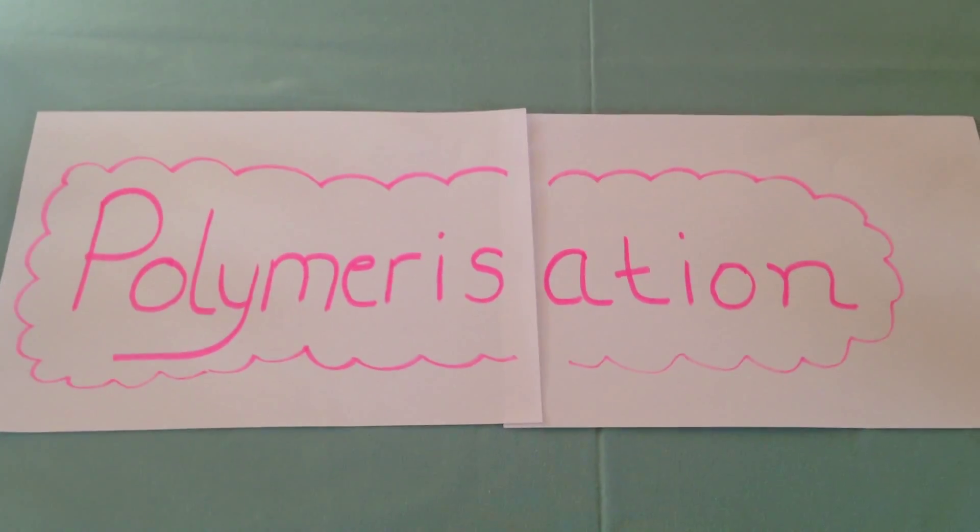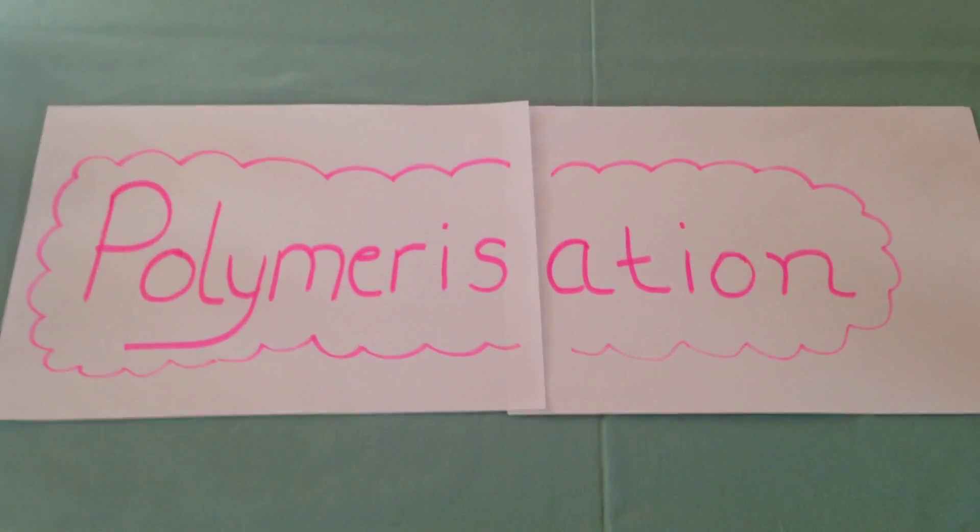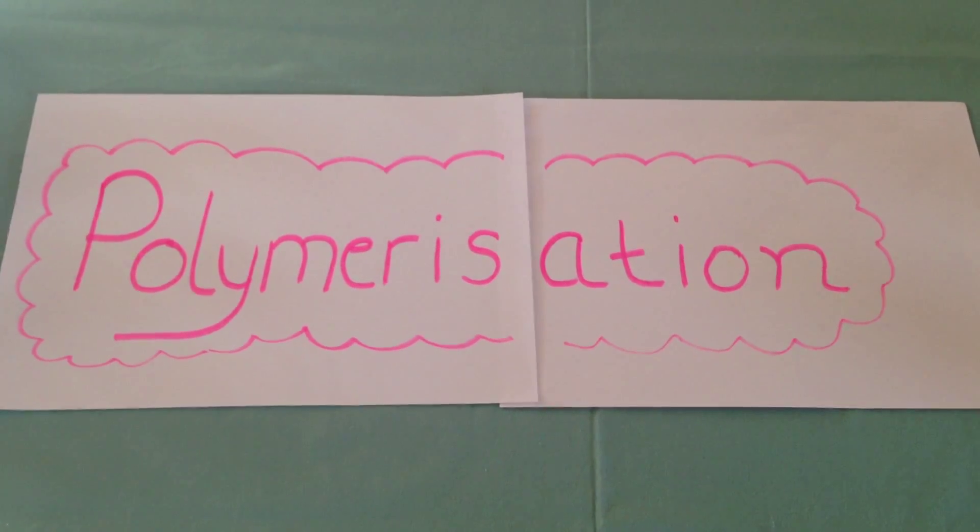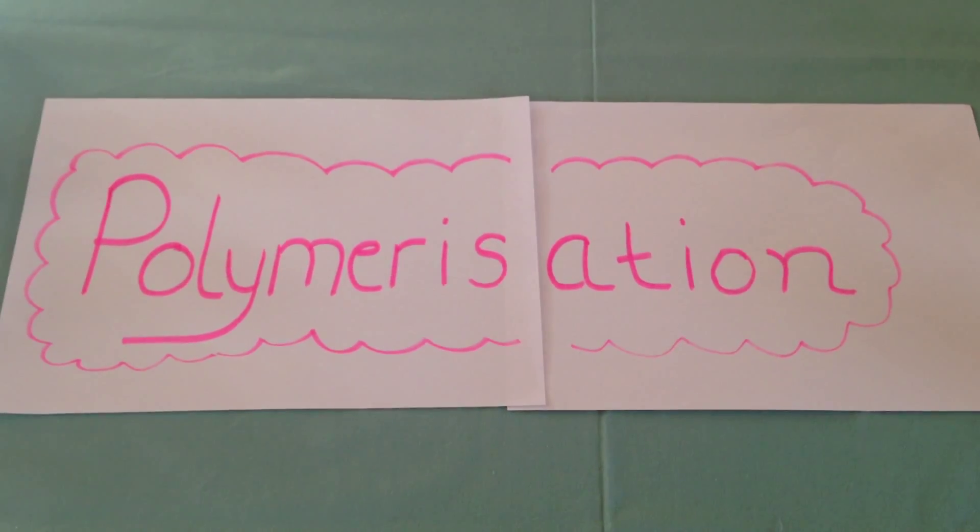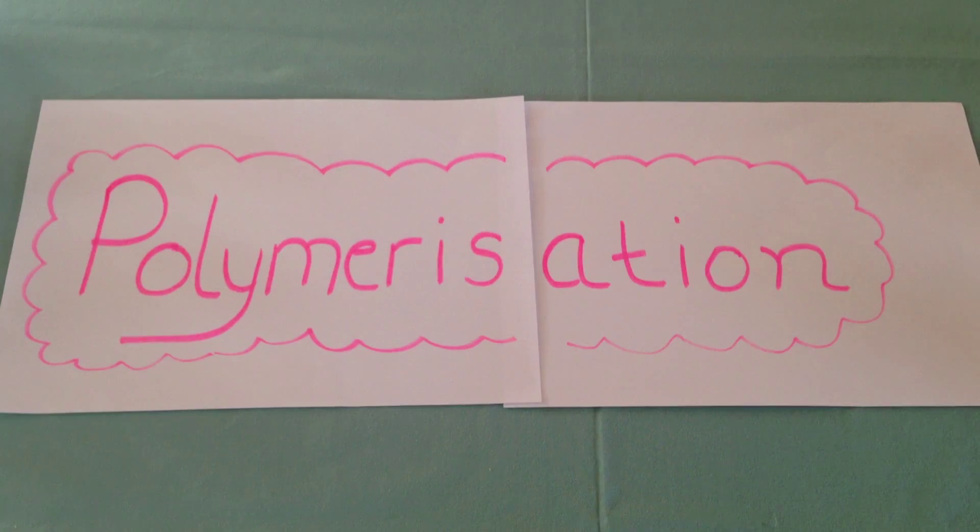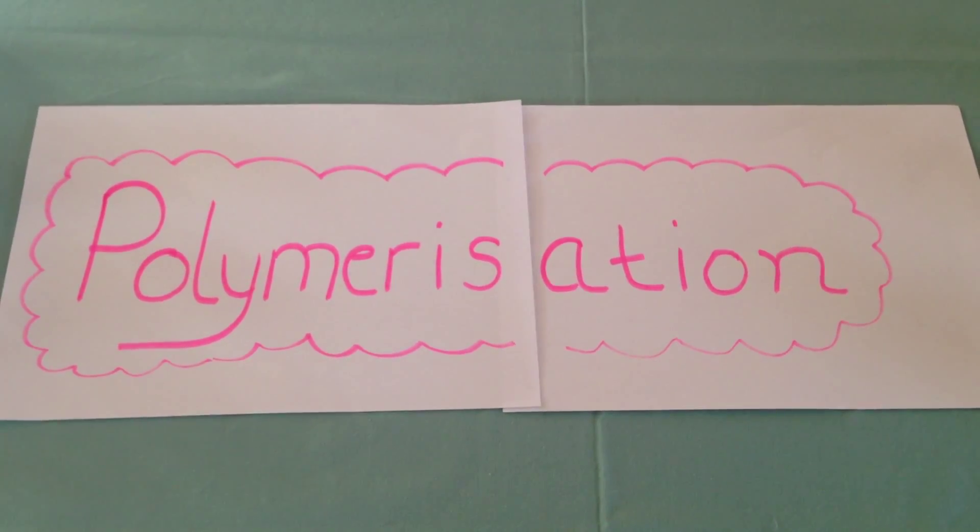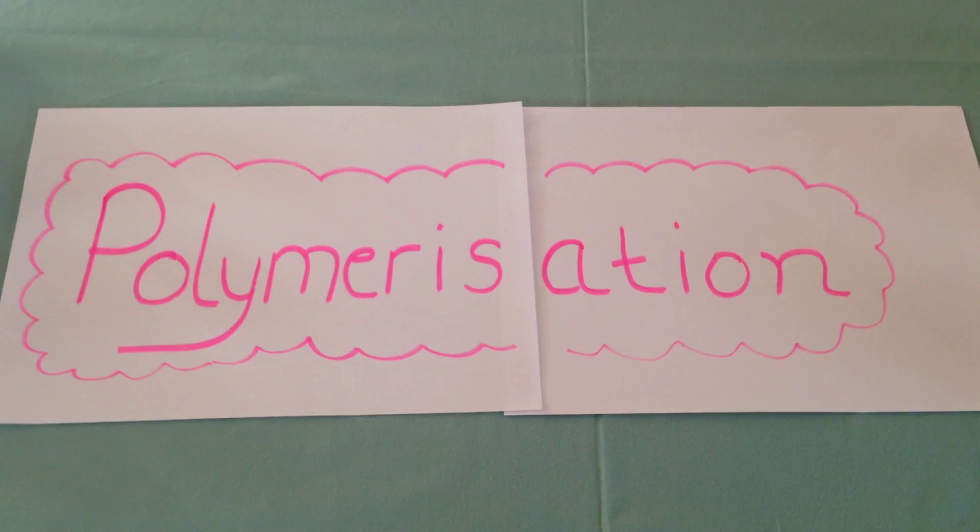This is a short tutorial on the process of polymerization. Polymers are very large molecules made when hundreds of monomers join together to form long chains.